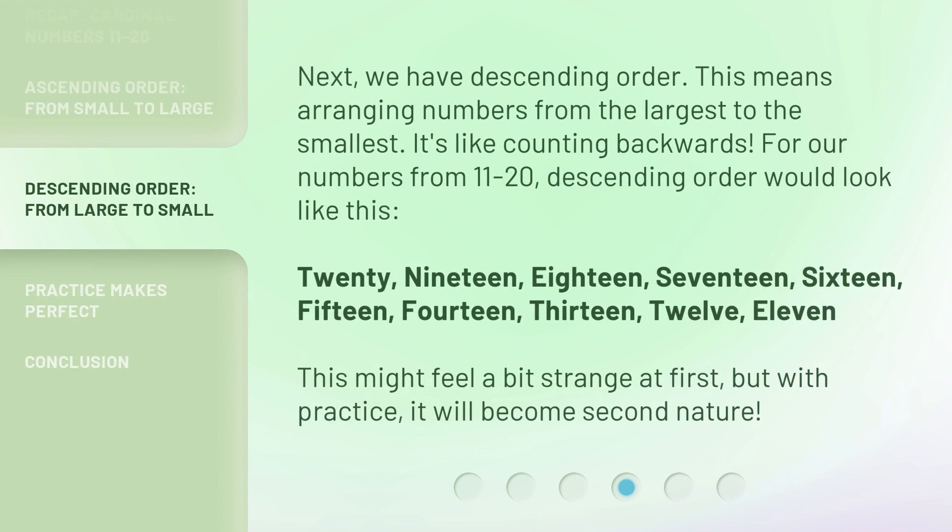Next, we have descending order. This means arranging numbers from the largest to the smallest. It's like counting backwards. For our numbers from 11 to 20, descending order would look like this: 20, 19, 18, 17, 16, 15, 14, 13, 12, 11.